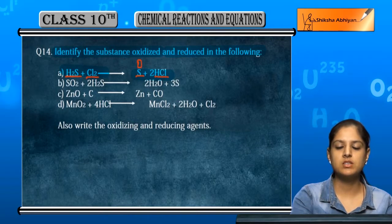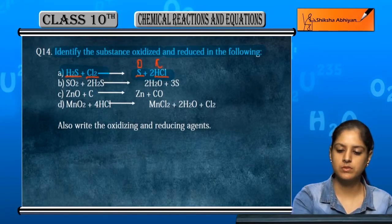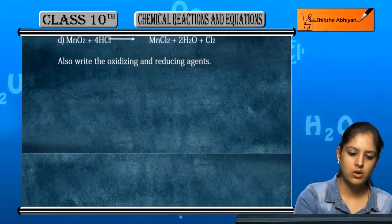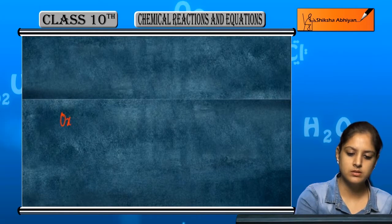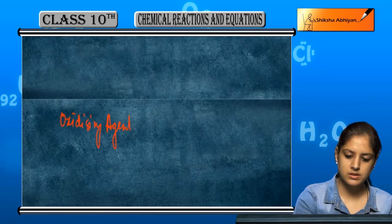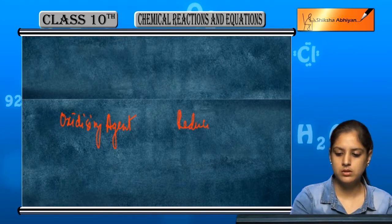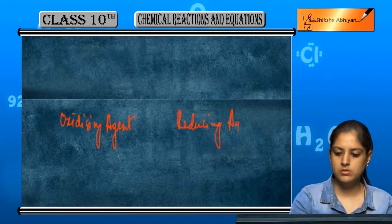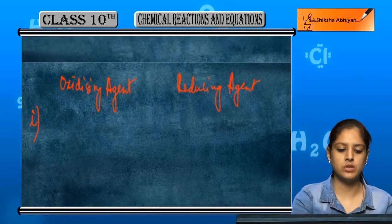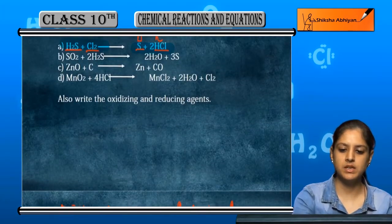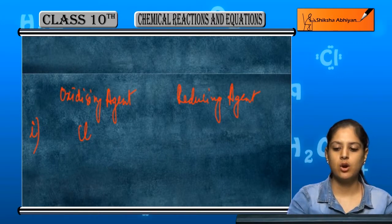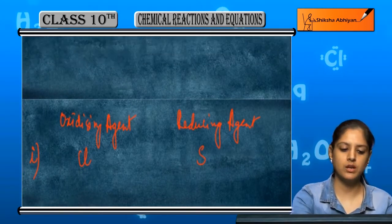Cl₂ is being reduced. The oxidizing agent is chlorine, and the oxidized substance is sulfur, which is the reduced form. Chlorine is the oxidizing agent.